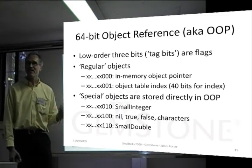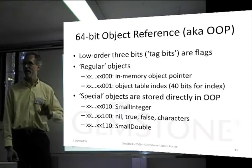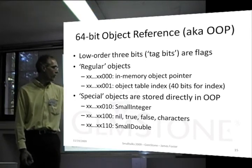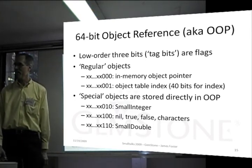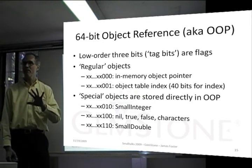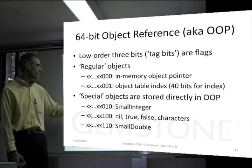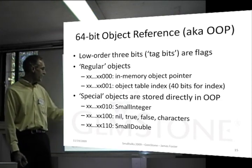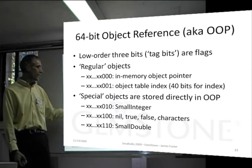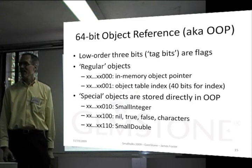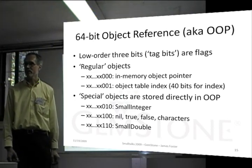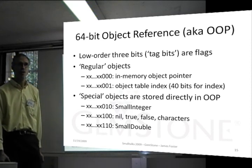0, 0, 1 is not a valid memory address if we're on 64-bit boundaries, so that flag indicates we're not an in-memory object, but an object in the object table. In GemStone, we implement a table — a linear list of object identifiers and information about them. There are 40-bits that give us an index into the object table, which gives us room for 2 to the 40th, or 1 trillion objects, that we can reference in a 40-bit identifier.